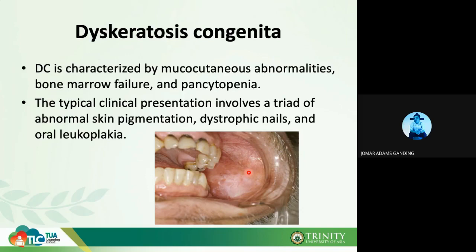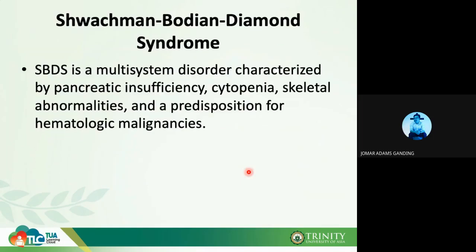Last but not the least of the inherited forms is Shwachman-Bodian-Diamond syndrome (SBDS), a multi-system disorder characterized by pancreatic insufficiency, cytopenia, skeletal abnormalities, and a predisposition for hematologic malignancy. Patients with SBDS have peripheral cytopenia and decreased pancreatic secretions, leading to malabsorption.